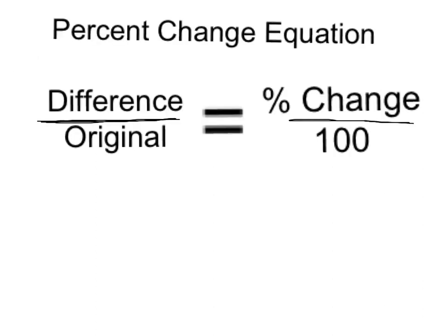Please take a second to write down the percent change equation. The percent change equation is the difference between the original value and the new value, and we always use the absolute value, meaning the positive value of that difference. We express if it's going down by saying decreasing, and if it's going up, we say increasing. So it's the difference over the original value equals the percent change over 100.